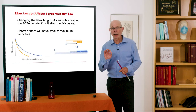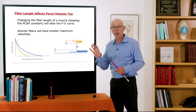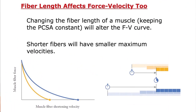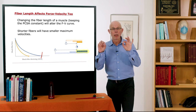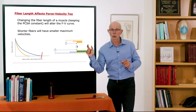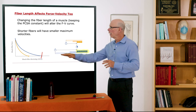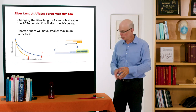Fiber length also affects the force-velocity curve. If I change muscle fiber length while keeping physiologic cross-sectional area and maximum contraction velocity constant, a longer-fibered muscle with more sarcomeres in series has a higher peak shortening velocity. Plotting muscle fiber shortening velocity versus force, long-fibered muscles show a higher end-to-end shortening velocity because each sarcomere has its own shortening velocity, and more sarcomeres in series sum to a higher total. Shorter fibers have lower velocity; longer fibers have higher contraction velocity.